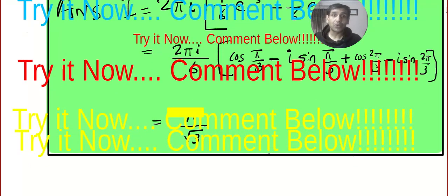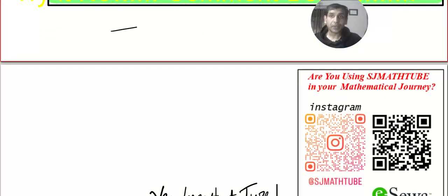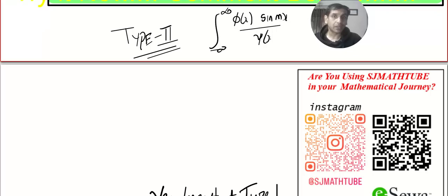So I'll be back with the next video in which we will discuss Type 2 improper integration. That will be minus infinity to infinity: polynomial multiplied by sin(mx) divided by another polynomial. So till then, my friends, bye.